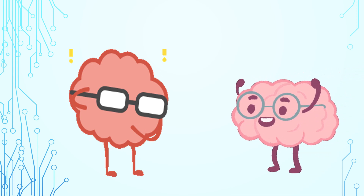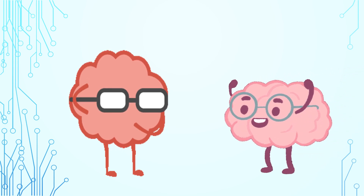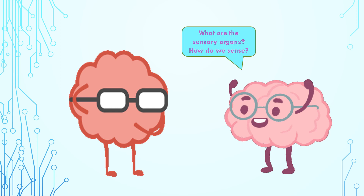Hello, Mr. Brainy. You told us about different senses, but you did not tell us about how we actually sense and what are the sensory organs that help the human body to sense? Yeah, I'll tell you that now. The human body receives signals through the sense organs. They have special nerves that send signals to the brain. The brain then processes these signals and sends back information to the rest of the body to tell it how to respond. Now, I will tell you about each sensory organ that gives us those five senses.